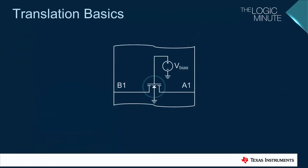LSF translators use 4-port channel FETs to carry out the translation. The gate bias voltage is essential to how the LSF translators operate, and the details for how it works are contained in the bias circuit video.